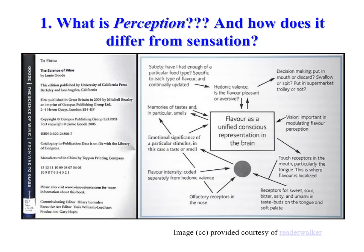We've got visual input, touch, gustatory or taste sensations, olfactory or smell sensations, things such as flavor intensity, emotional significance, and memories from past experiences with wine. All of these come together in our decision-making process to give us a sense of a unified conscious representation. Perception is complicated, but it's fun to explore. So let's continue.